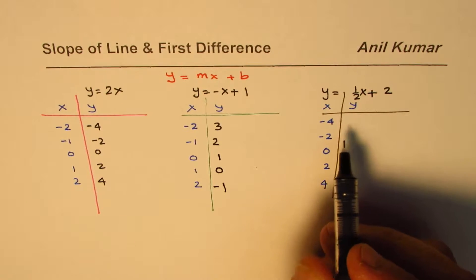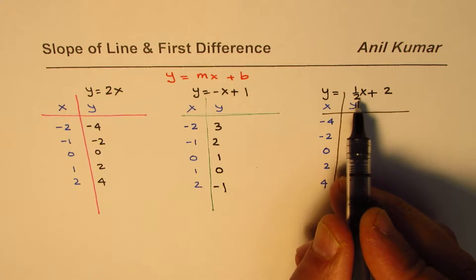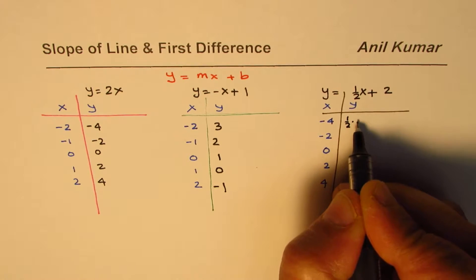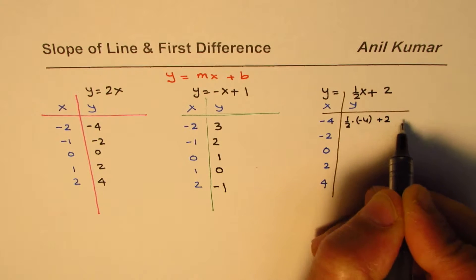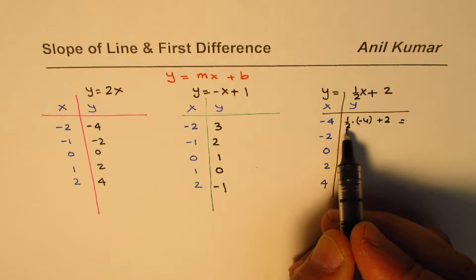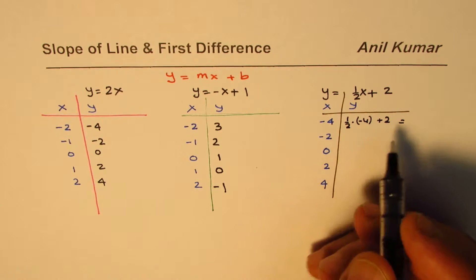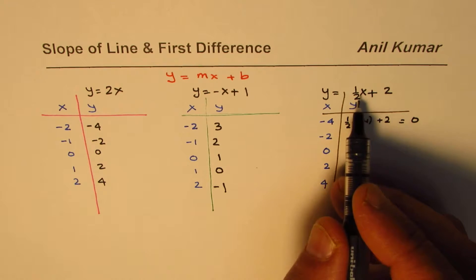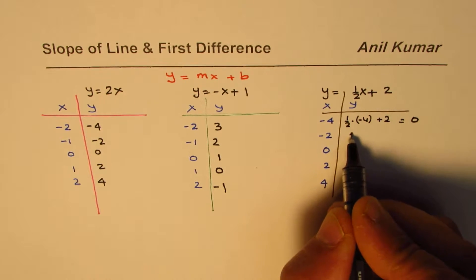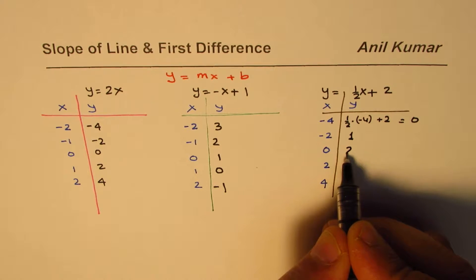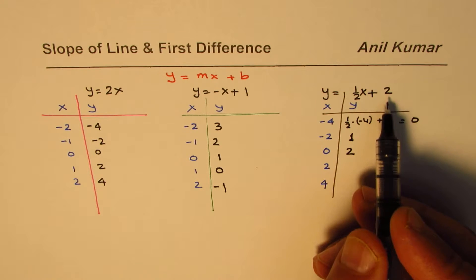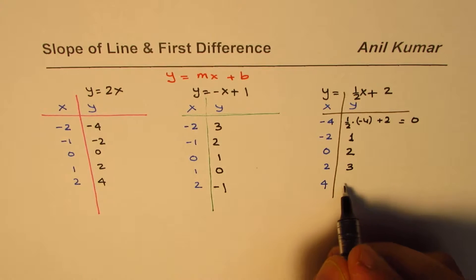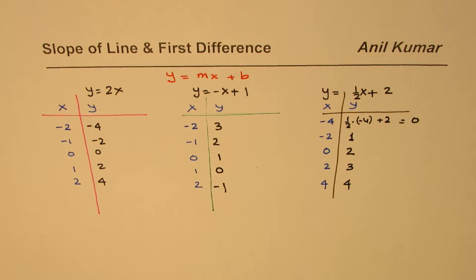Continuing with y = -x + 1: 0 + 1 = 1, -1 + 1 = 0, -2 + 1 = -1. For y = ½x + 2 with x = -4: ½ × (-4) + 2 = -2 + 2 = 0. With x = -2: -1 + 2 = 1. With x = 0: y = 2, which is indeed the y-intercept. For x = 2: 1 + 2 = 3, and for x = 4: 2 + 2 = 4.